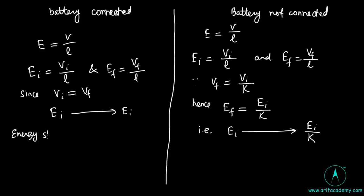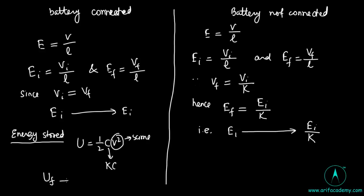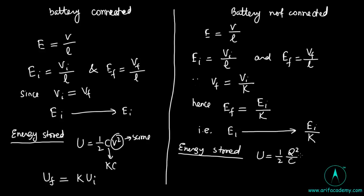Now let's think about energy stored in both cases. In the first case where voltage is constant, we use the formula U equals half CV squared. Since V is the same and C becomes kC, the total energy stored will be k times more, so U_f equals k times U_i. In the other case where the battery is not connected, we use U equals half Q squared over C. Since Q is the same but C becomes kC, the energy stored decreases: U_f equals U_i divided by k.